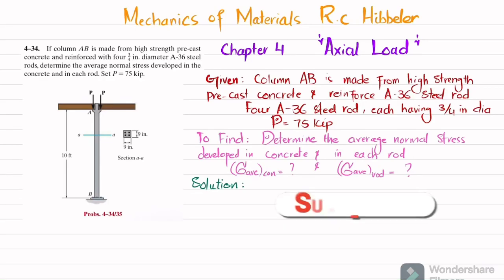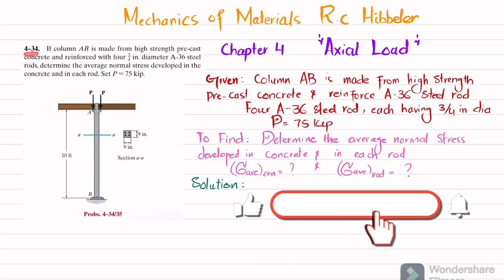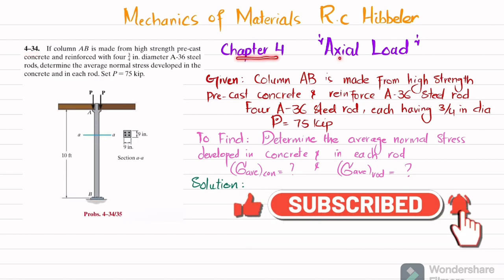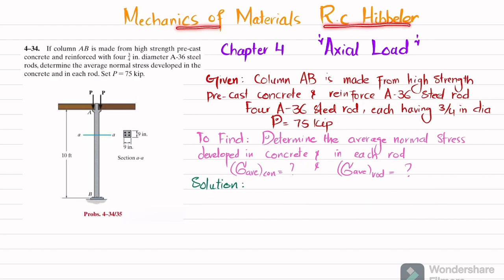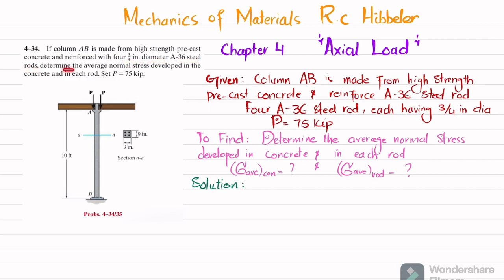Welcome back. In this video we are going to solve problem 4-34, taken from chapter 4, Axial Load, from the book Mechanics of Materials by R.C. Hibbeler. The statement is: if column AB is made from high-strength pre-cast concrete and reinforced with four 3/4-inch diameter A36 steel rods, determine the average normal stress developed in the concrete and in each rod. P is equal to 75 kips.